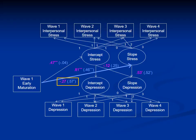In contrast, looking at the bolded blue line: for boys but not girls, early maturation predicted increases in interpersonal stress over time. In turn, increases in interpersonal stress predicted increases in depression for both boys and girls. For boys, there was a significant indirect effect of early maturation on increases in depression through increases in interpersonal stress. So early maturing boys showed increasing interpersonal stress over time, which then predicted increases in depression.